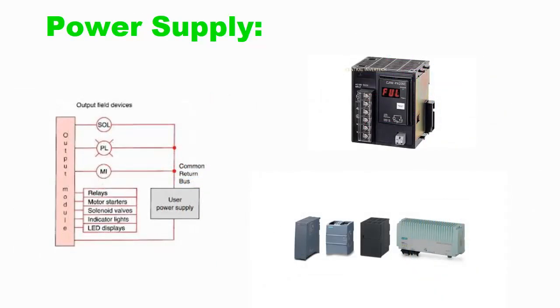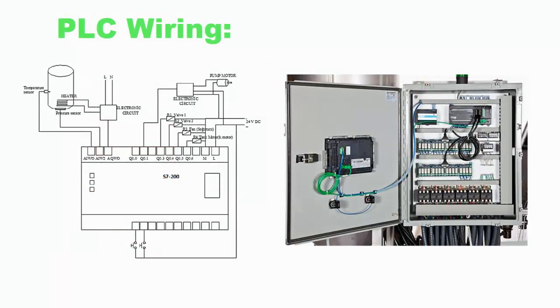Power supply: Connect the power supply to the appropriate terminal block in the panel. Ensure proper voltage and current ratings are observed. PLC wiring: Connect the PLC to the terminal blocks for both inputs and outputs. Use appropriate cables, ensuring that signal integrity is maintained.